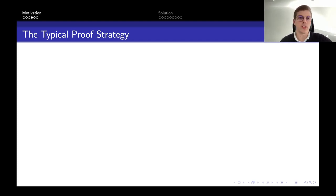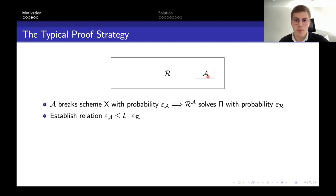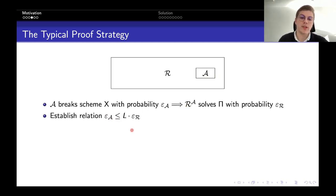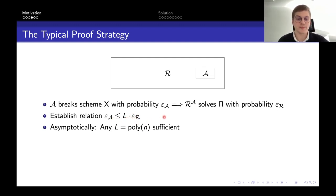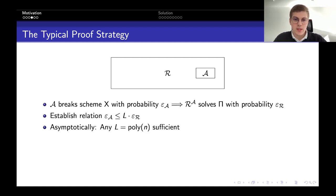To do that, let's look at the typical proof in cryptography. We have an adversary A that breaks a scheme, and we build a reduction that uses A as a subroutine to solve some hard problem. When we do that, we establish a relation between the success probabilities of these two algorithms. Let's call this multiplicative factor the security loss. Asymptotically, any polynomial security loss is acceptable — if epsilon_r is negligible and l is polynomial, then epsilon_A is also negligible. But if you want to derive concrete parameters for your scheme in practice, the security loss l becomes important.